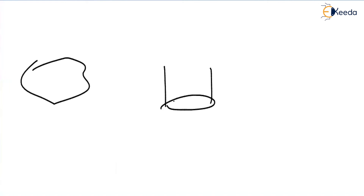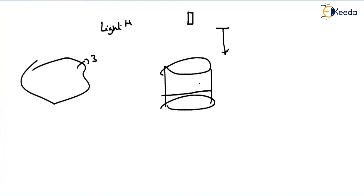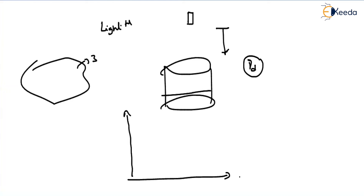We take soil mixed with a particular water content, place it in a tray, and fill the mold — either 1-liter or 2.25-liter. For the light test, we divide the sample into three parts, fill each layer in the mold, apply hammer blows, then take the second and third layers similarly. After compaction, we scrape the top and measure the weight to calculate dry density, gamma_d.